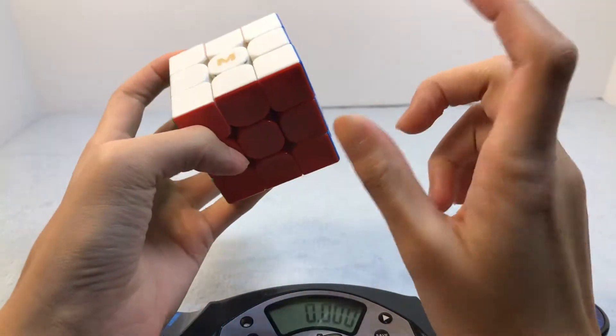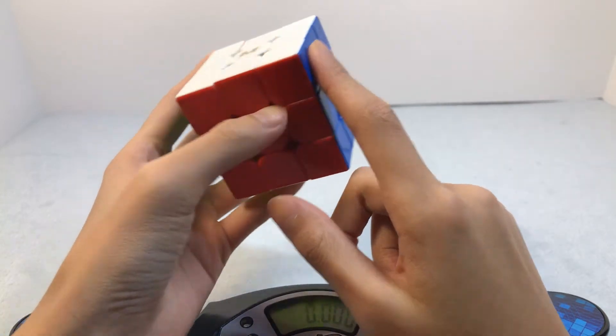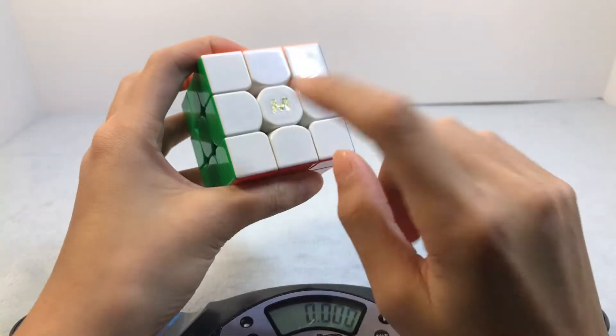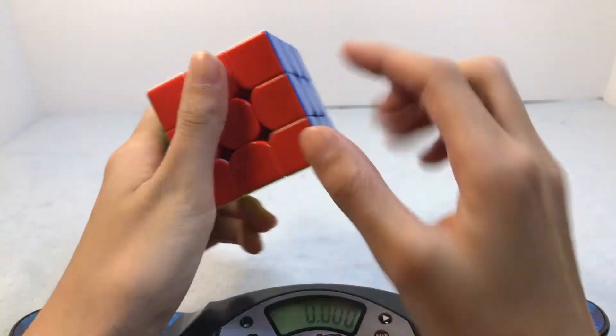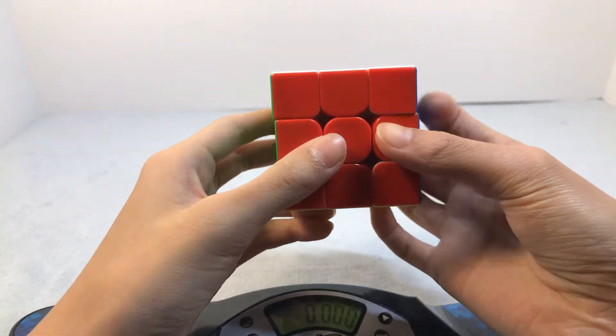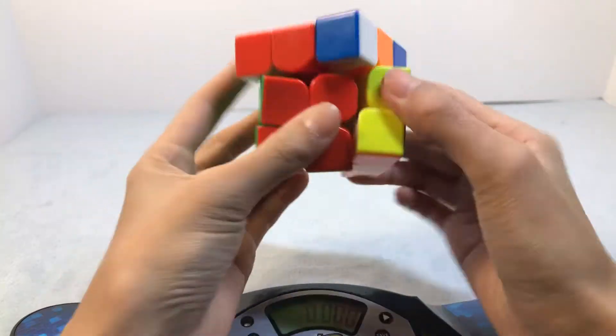I also use setting 6 because I want faster but not unstable. So it's between 6 and weaker magnets.